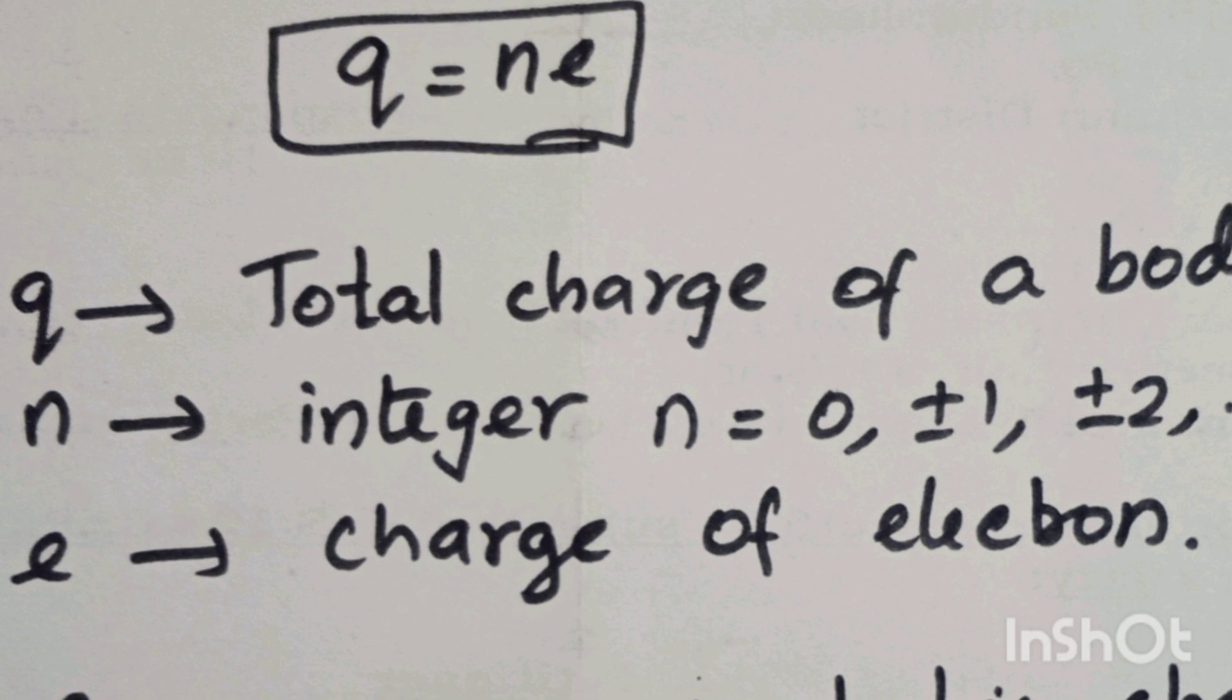Electric charge quantization formula: Q equals Ne. Q is the total charge of the body. N is an integer: 0, plus or minus 1, plus or minus 2, and so on. E is the charge of electron, which is 1.6 into 10 power minus 19 coulomb.